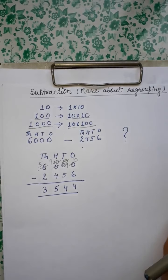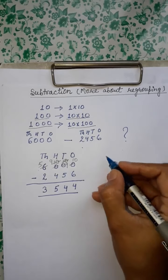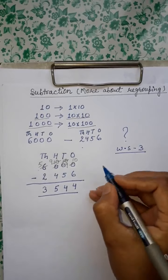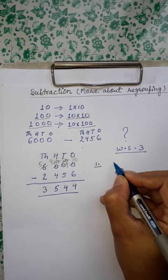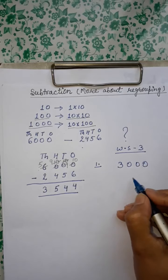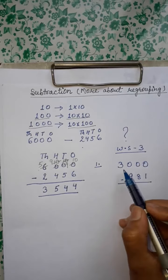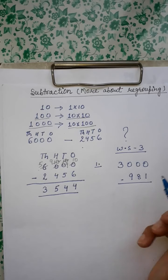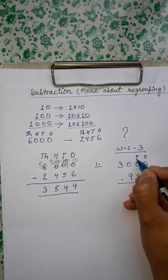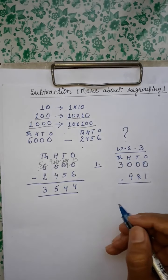Now on the basis of these, your worksheet 3 is next — let's do that. Our first question is: our first number is 3,000 and our second number is 981. What we have to do? Make places: ones, tens, hundreds, thousands.